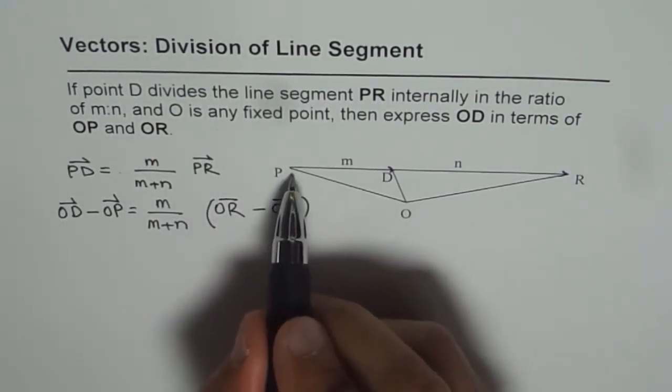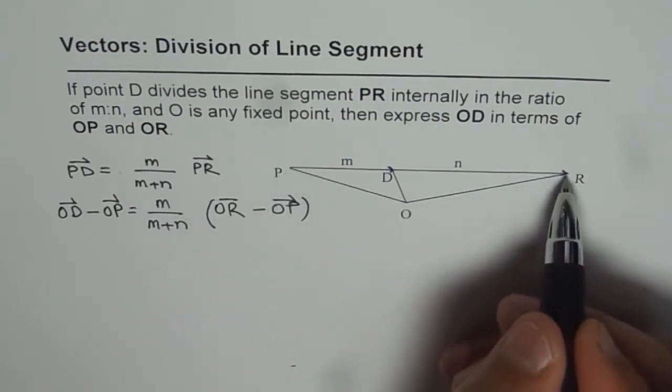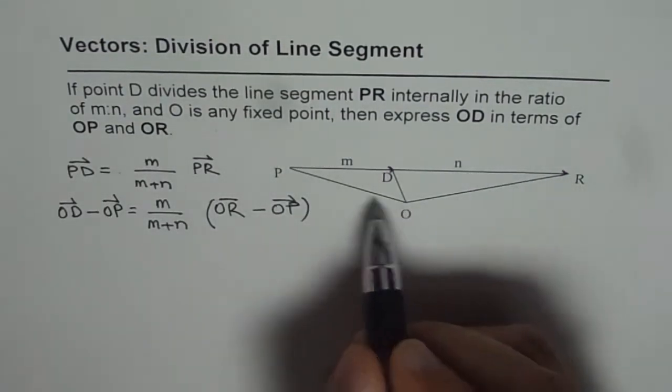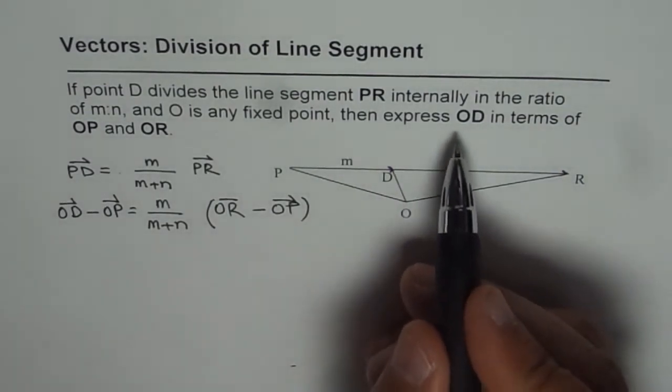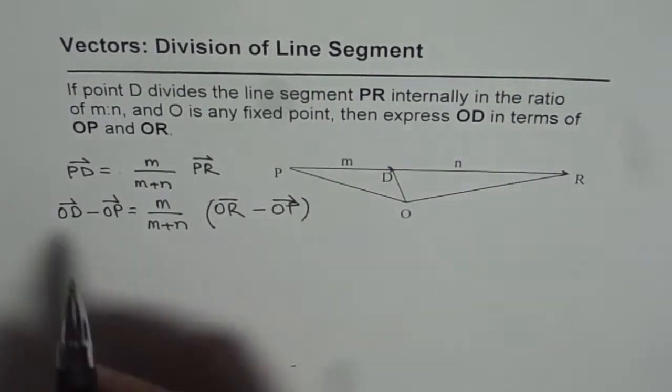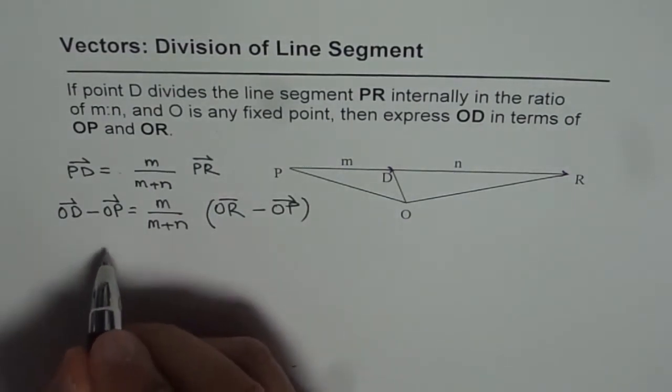So the vector initiates from P, terminates at R and therefore it is OR minus OP. Now what do we need to find? We need to find OD. So let's isolate OD from here.